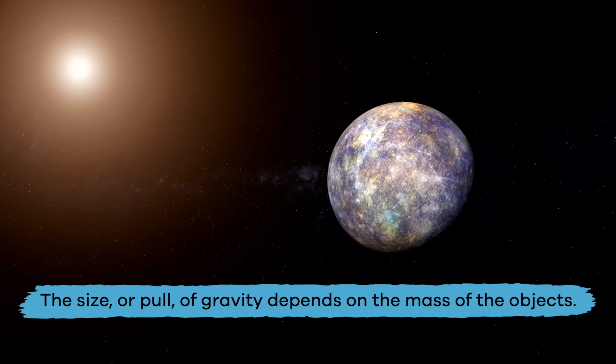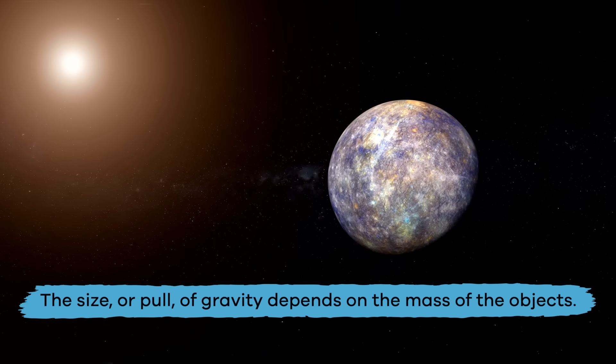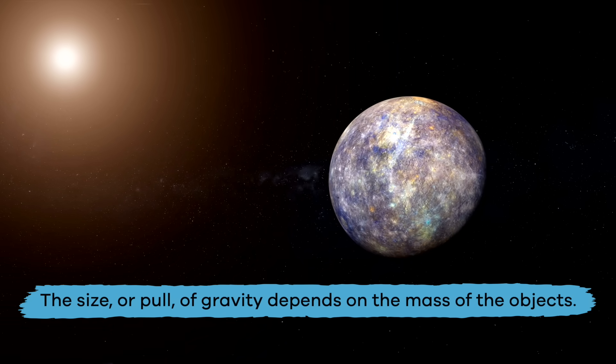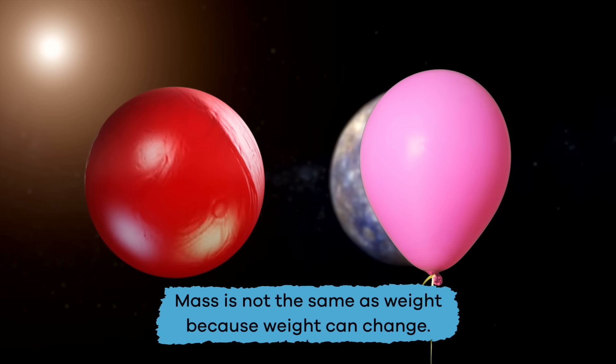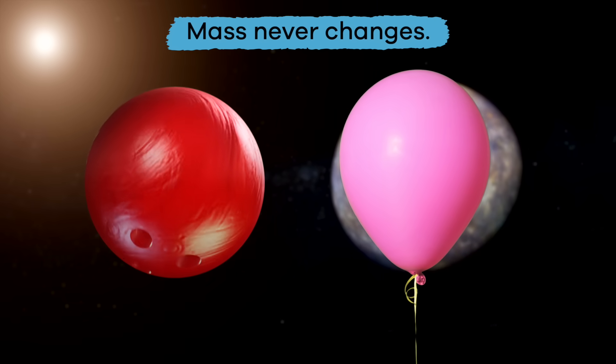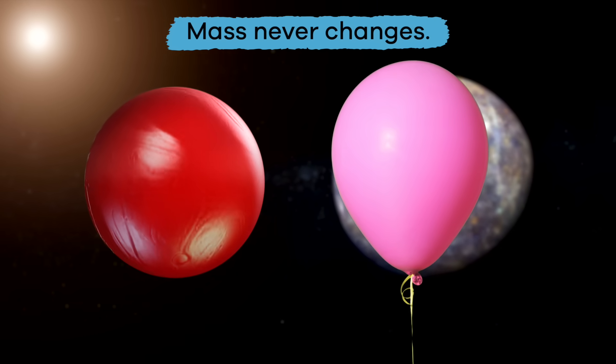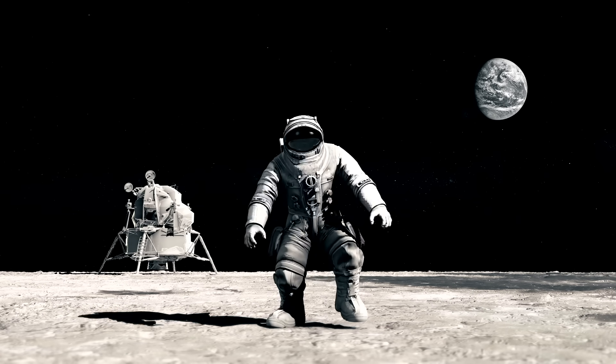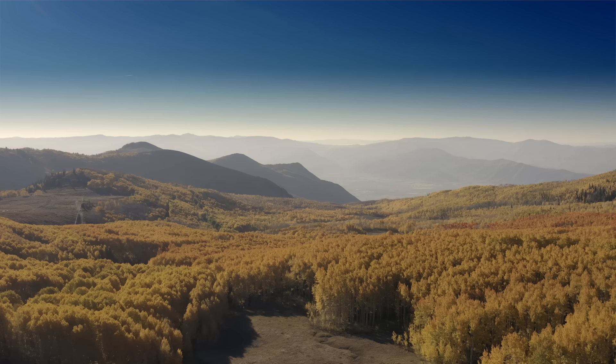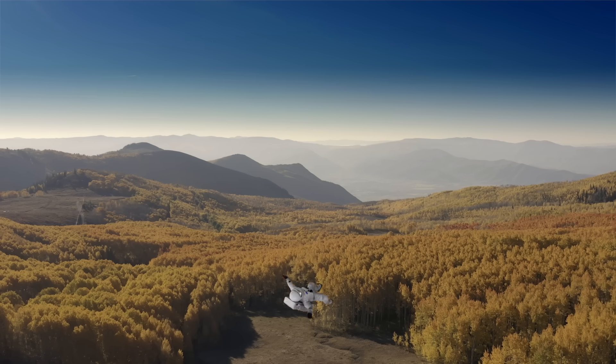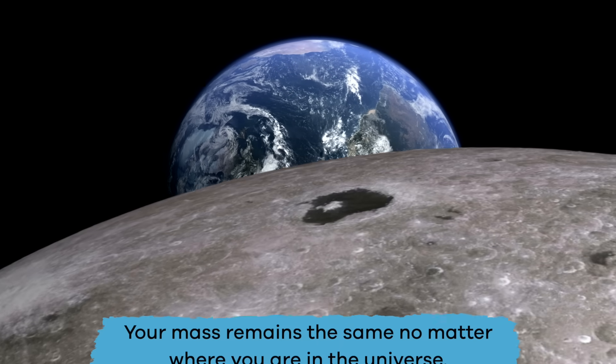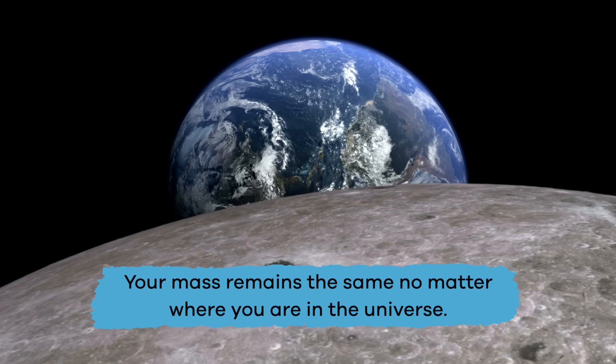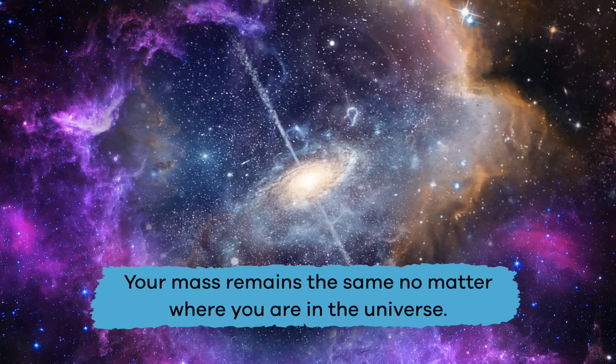The size, or pull, of gravity depends on the mass of the objects. Mass is not the same as weight, because weight can change. Mass never changes. For example, your weight on the Moon is different than your weight on Earth because the gravitational pull of the Moon is different than the Earth's. But your mass remains the same, no matter where you are in the universe.